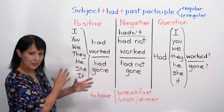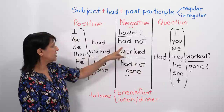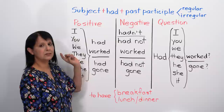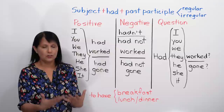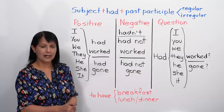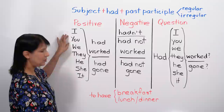In a negative sentence, we simply add not. Instead of had worked, we say had not worked: I had not worked, you had not worked, we had not worked, and so on. If you want to shorten it, which we often do especially in conversation, we don't say I had not worked — we say I hadn't. So: I hadn't worked, I hadn't gone. The same for all subjects with the negative form.